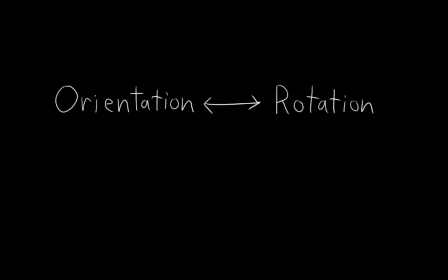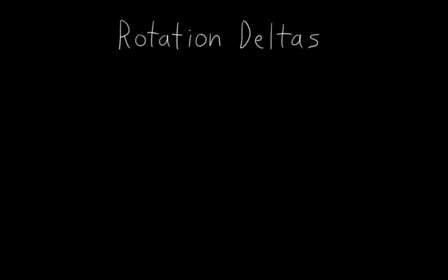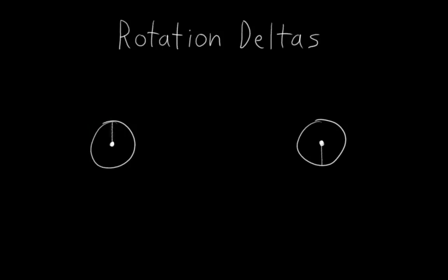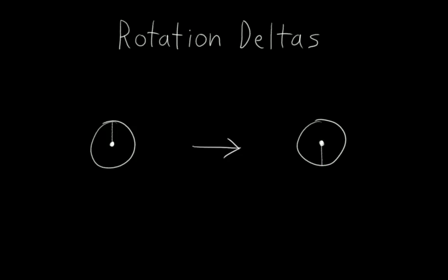So I've already made the distinction between orientation and rotation, but there is a further distinction to make between two different kinds of rotation. The first is what I will call a rotation delta. With rotation deltas, the only aspects of the rotation that we care about is the difference it creates between two orientations. Or in other words, all we care about is that this orientation changes into this orientation. We don't care how it got there.